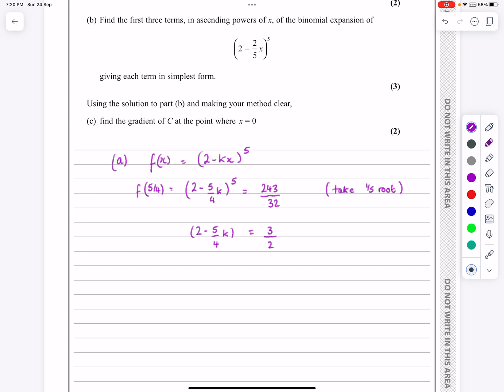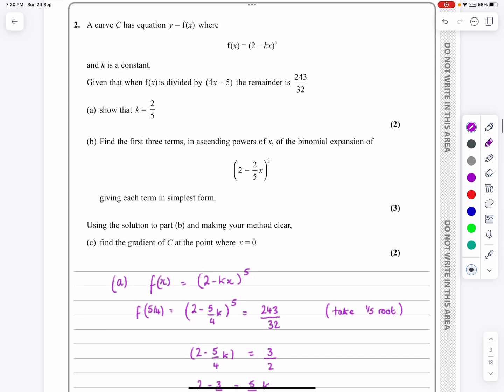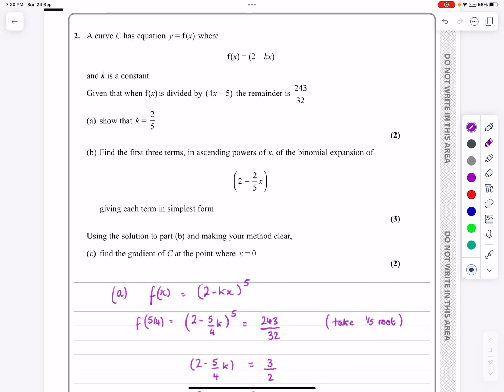So we can just rearrange and get k from this. We're trying to show k is 2/5 apparently. So just take your time with this if it's a proof. I'm going to get 2 minus 3/2 is equal to 5/4 k. So 5/4 k is equal to a half. And so from there, I'm happy to say, okay, so k works out to be equal to 2/5. So part A, pretty straightforward using the remainder theorem.